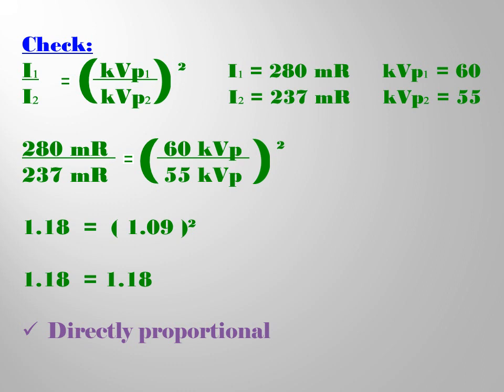So it says here that KVP and intensity are proportional. So when we decrease KVP, we also decrease intensity. If we increase KVP, we also increase intensity of radiation.